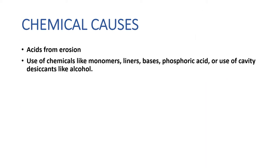Chemical causes include acids from erosion or the use of chemicals such as monomer, liner bases, phosphoric acid, or cavity desiccants like alcohol. Any of these chemicals can cause pulpal disease, but chemical causes of pulp injury are probably the least common.